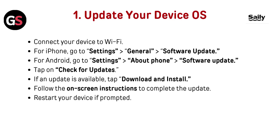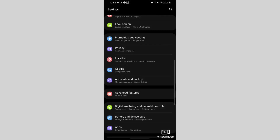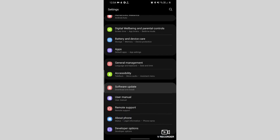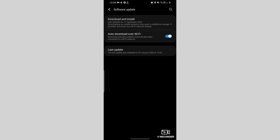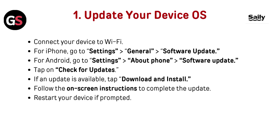Update your device operating system. Connect your device to Wi-Fi. For iPhone, go to Settings, then General, then Software Update. For Android, go to Settings, then About Phone, then Software Update. Tap on Check for Updates. If an update is available, tap Download and Install. Follow the on-screen instructions to complete the update, then restart your device if prompted.